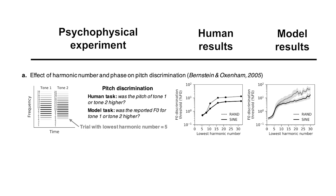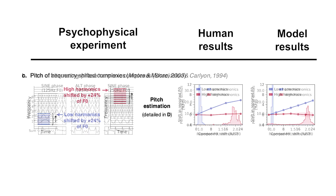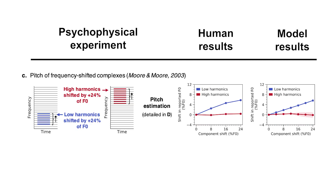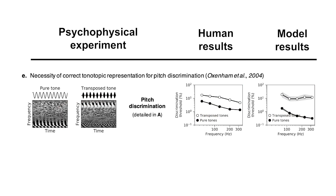Despite never being fit to human data in any way, when we tested our model on stimuli from human pitch psychophysics experiments, we found that the model does a remarkably good job replicating aspects of human behavior. It really suggests that you can understand these aspects of human behavior as byproducts of a system optimized to estimate the fundamental frequency of natural sounds heard through a human cochlea. Now we can go back in and test which constraints of the model were actually necessary to achieve human-like behavior.